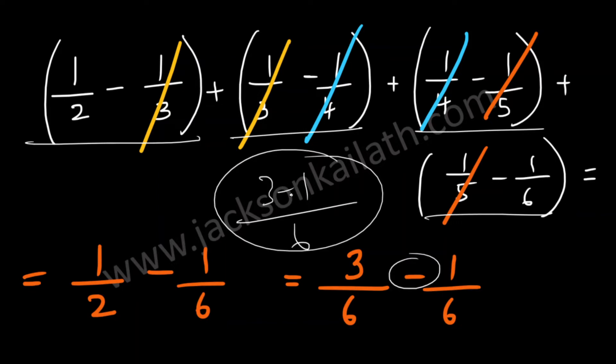So this is 3 minus 1 by 6, which is 2/6, which is equal to 1/3, and that is the correct answer to this question, which is answer option C.